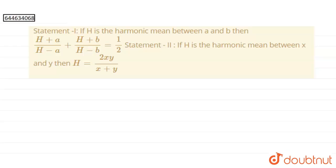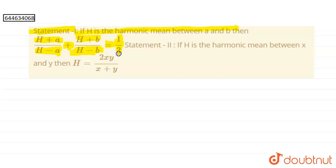Hello everyone. In this question we have got Statement 1: if h is the harmonic mean between a and b, then (h+a)/(h-a) + (h+b)/(h-b) equals 1/2. And Statement 2: if h is the harmonic mean between x and y, then h = 2xy/(x+y).